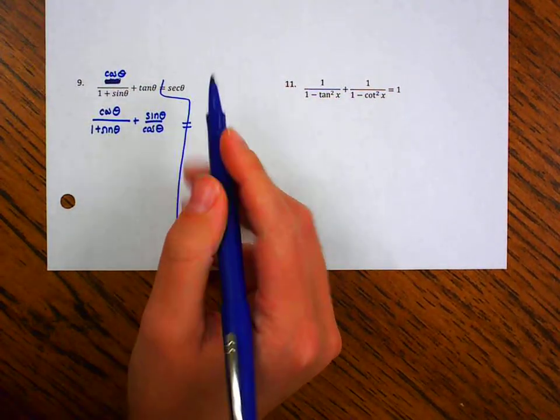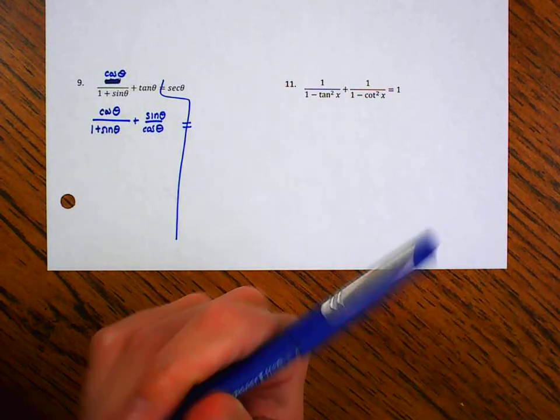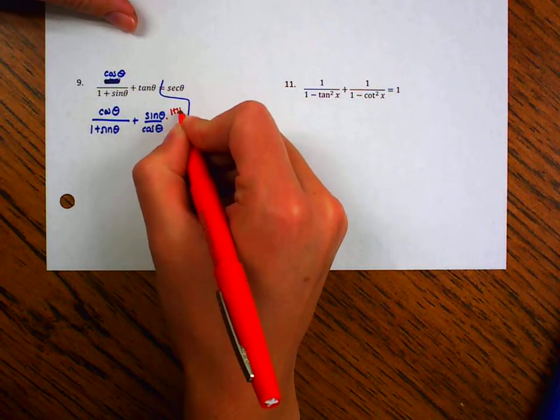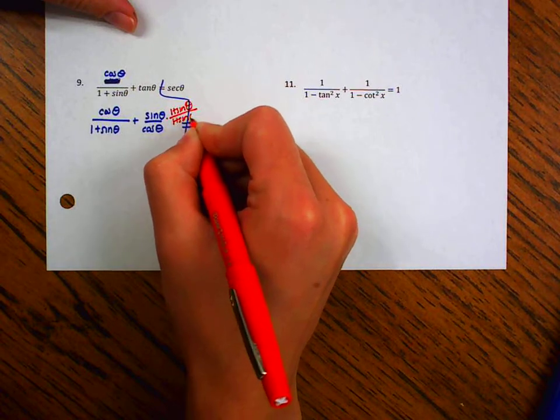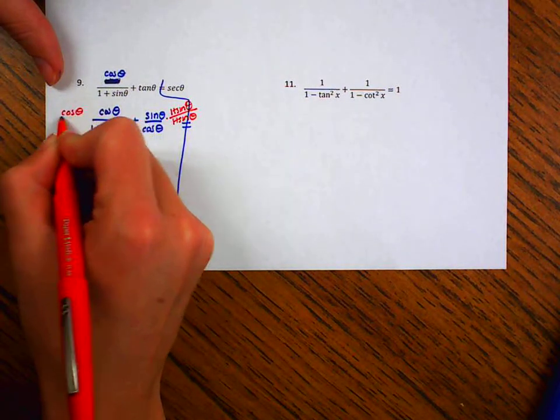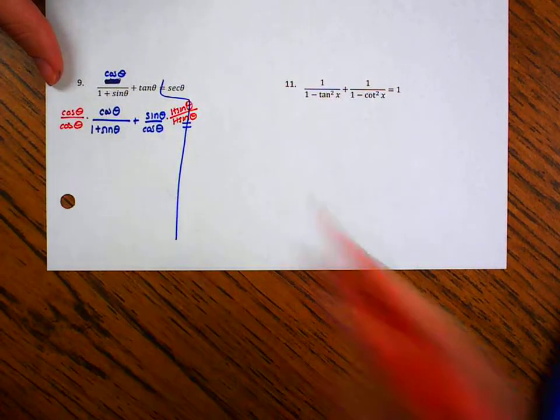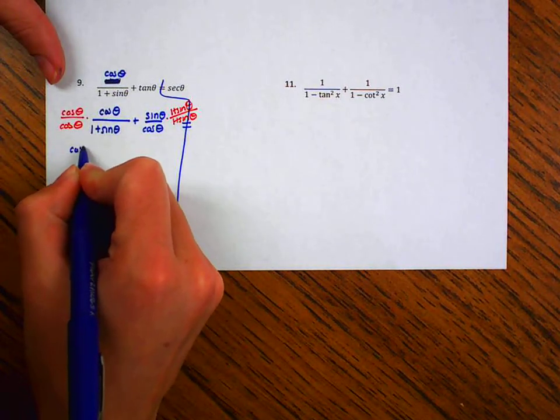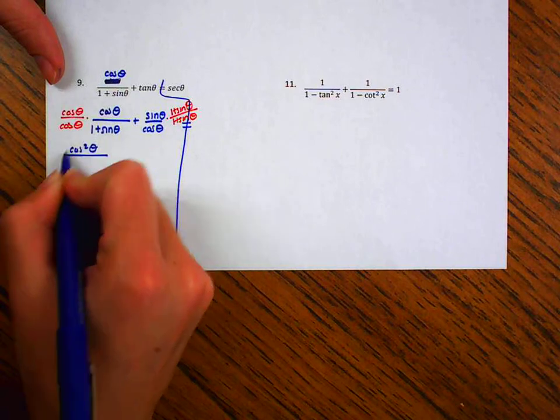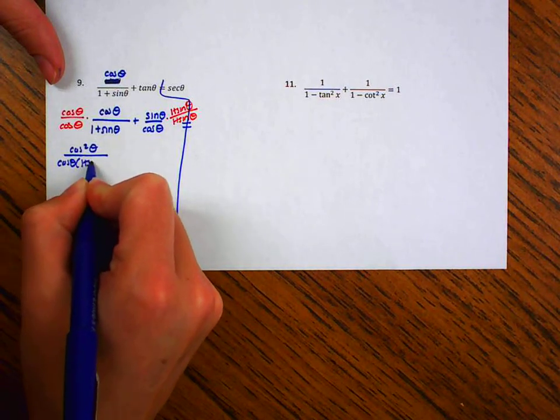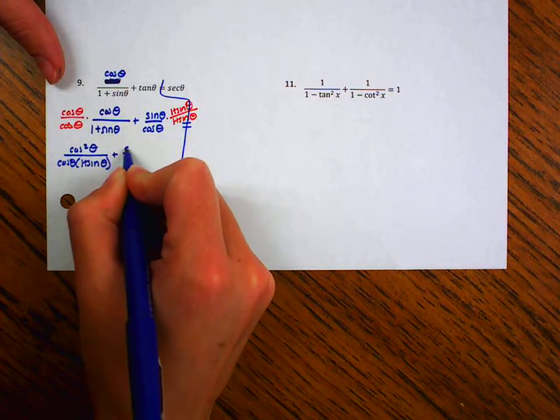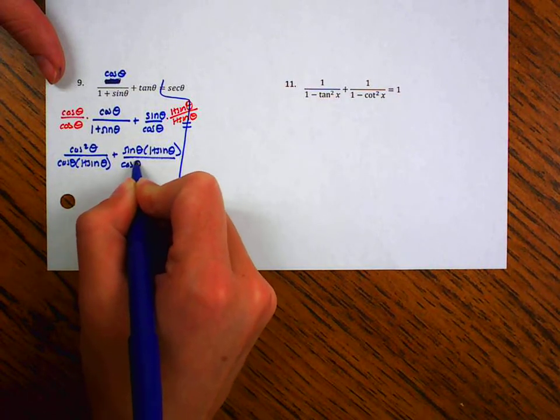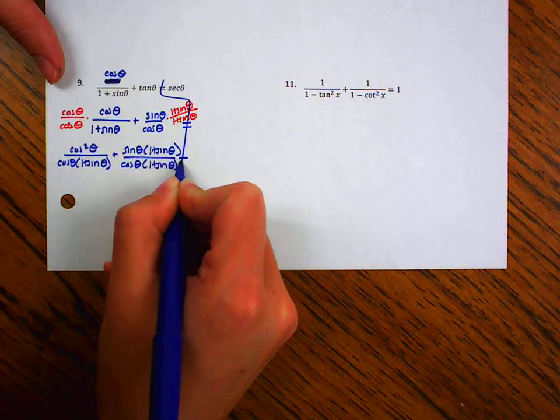So now I'm going to try getting a common denominator because at this point there's no Pythagorean identities. I can't really factor. So I'm going to multiply this side by 1 plus sine over 1 plus sine theta. And I'm going to multiply this side by cosine theta times cosine theta. So when I do that on this side, I'm going to get a cosine squared theta over a cosine theta 1 plus sine theta. Plus, on this side, I'm going to have a sine theta times 1 plus sine theta over a cosine theta 1 plus sine theta.